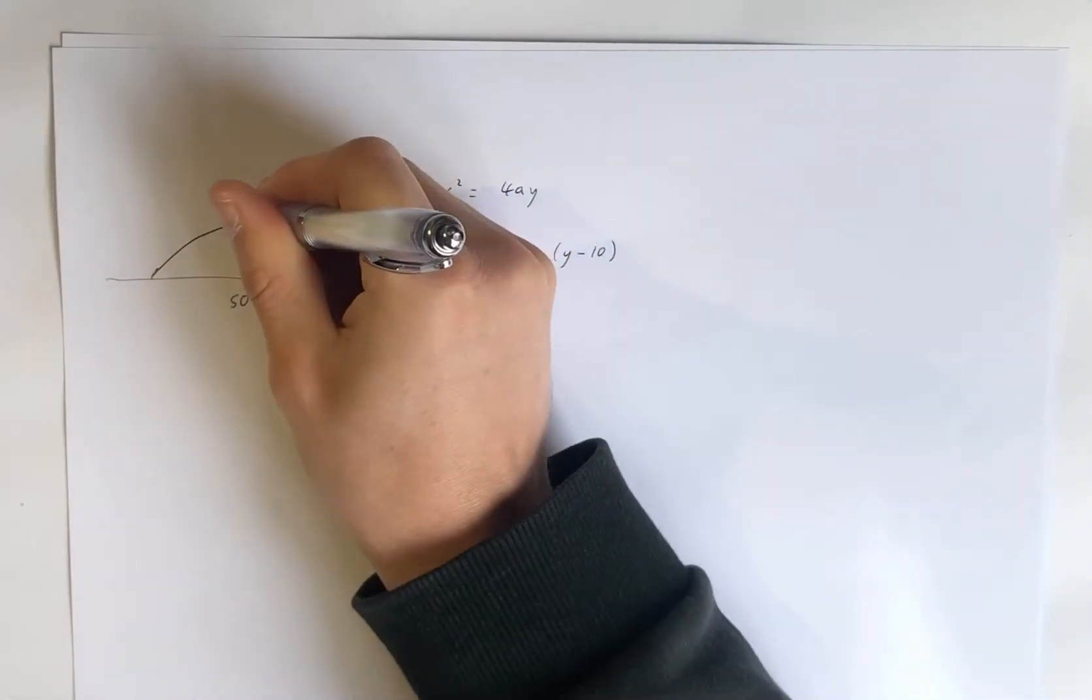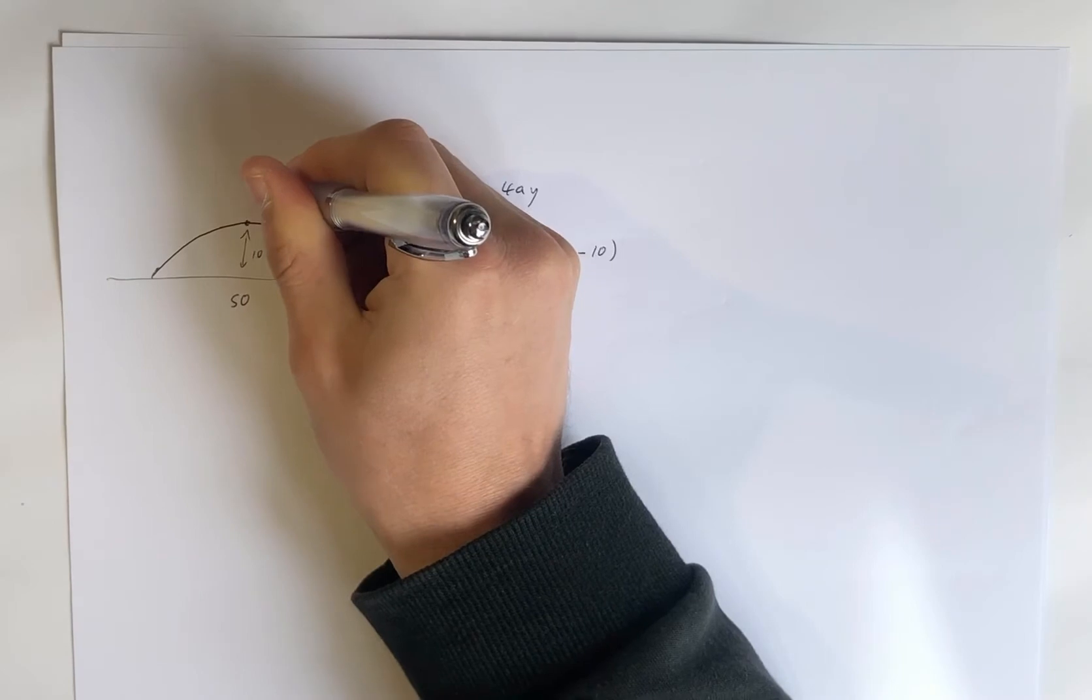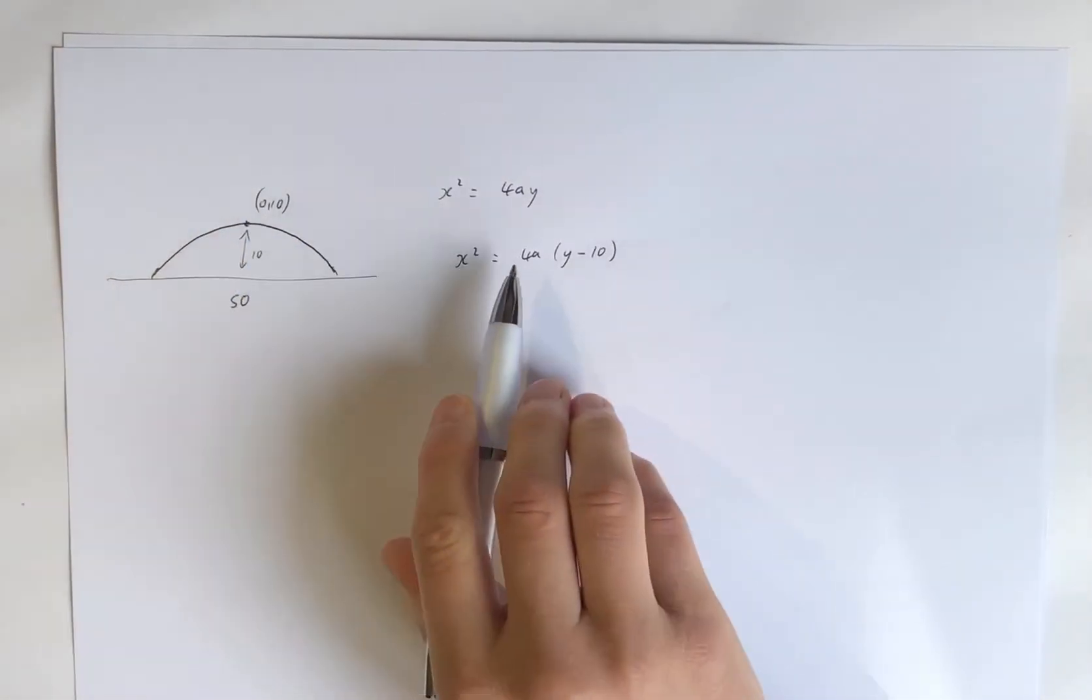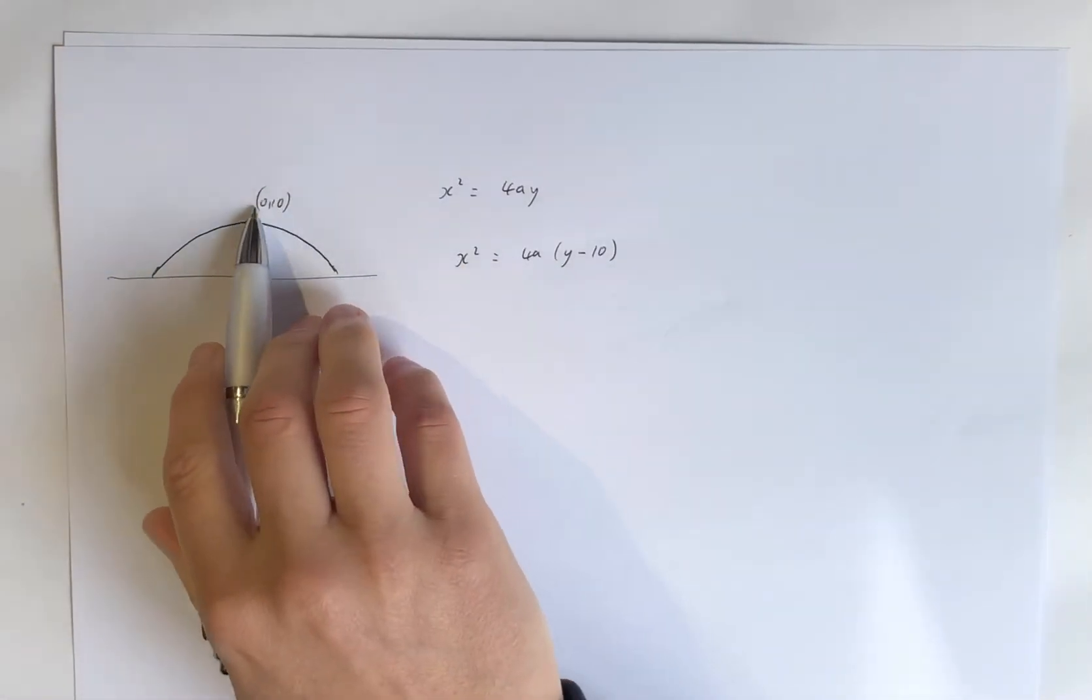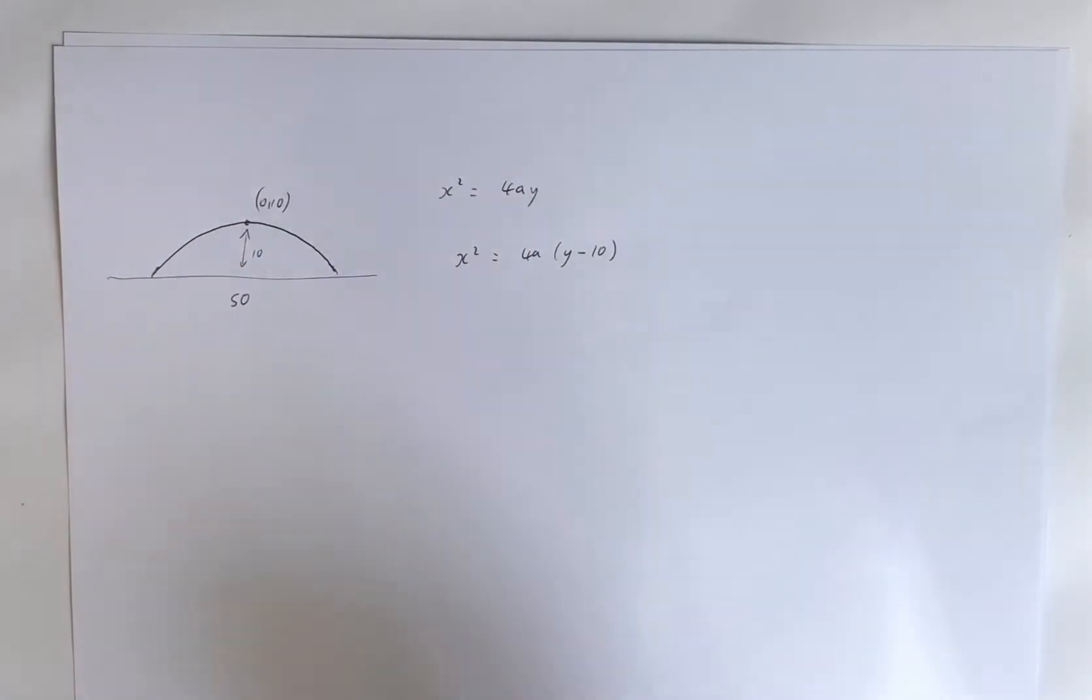I believe that's right. So we just need to solve for A. Now if we put this point on here which is at 0, 10, you'll notice you would actually just get 0 equals 0. So that point's not going to help us solve for A. This point here will, though.